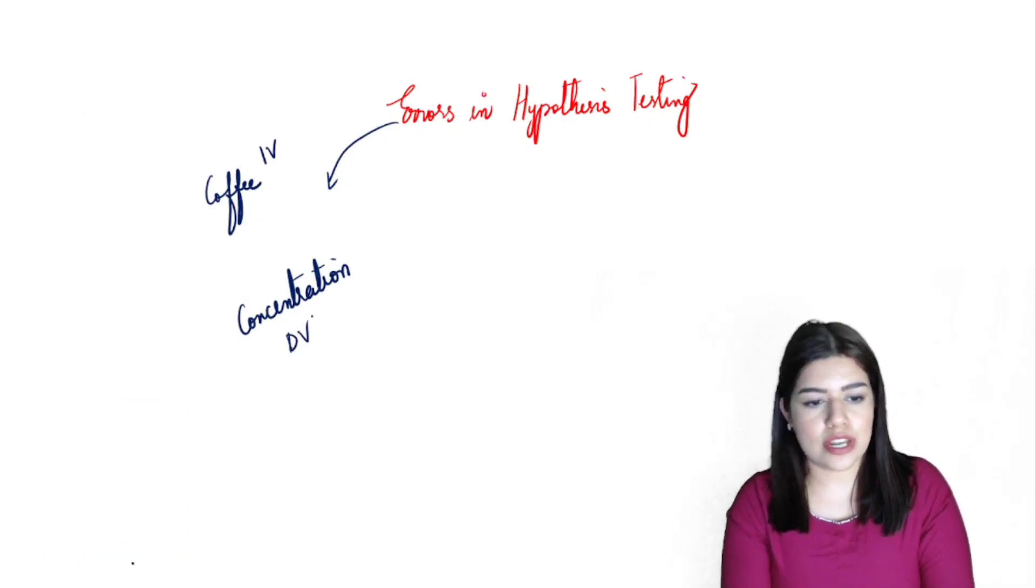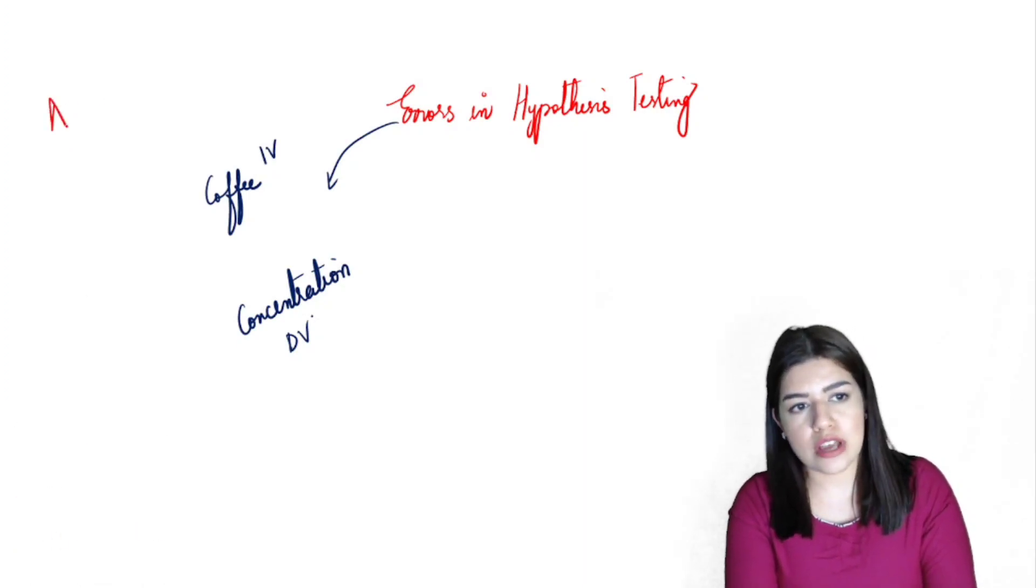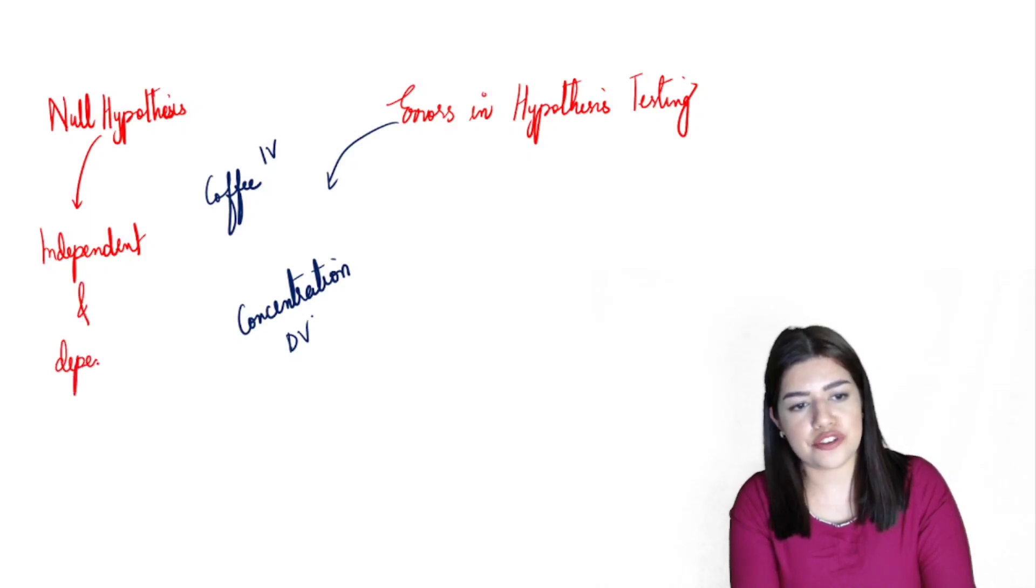Now, ideally the null hypothesis will tell me that the two variables aren't related at all. The null hypothesis tells me that the independent and the dependent variable have no relation with each other. Not related at all.